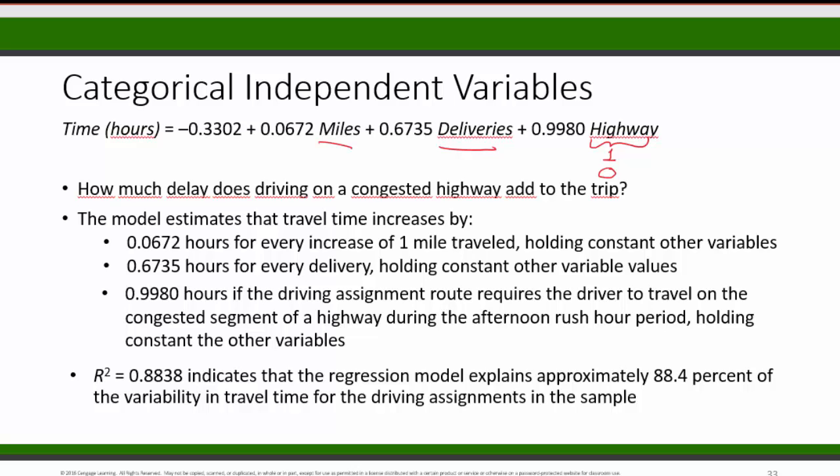Well, driving on a congested highway means the dummy variable highway will be equal to 1. So this whole term will be 0.9980. And not driving on a congested highway means the dummy variable highway is equal to 0. So this term, 0.9980 times 0, will be now 0. So if two trips require the same number of miles and the same number of deliveries, and one includes the congested highway and the other doesn't, then the difference in the travel time will be 0.9980 hour or about an hour.